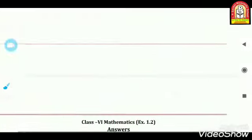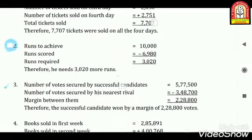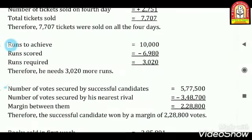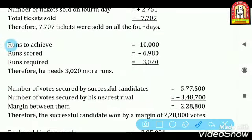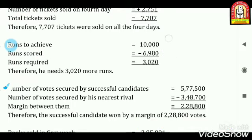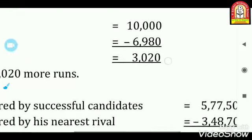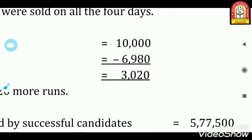Second question: उसको runs total achieve करने हैं 10,000। Already उसने 6,980 runs score कर लिए हैं। उसका find क्या करना है हमको? Difference — दोनों के बीच का difference find करना है।